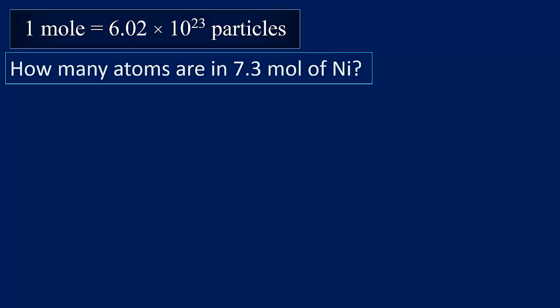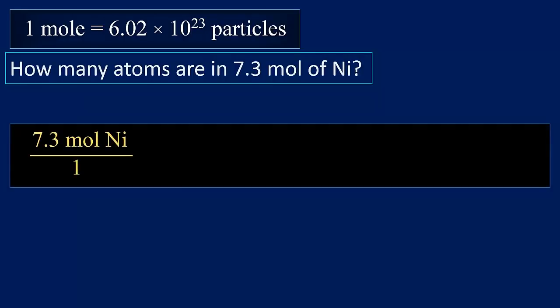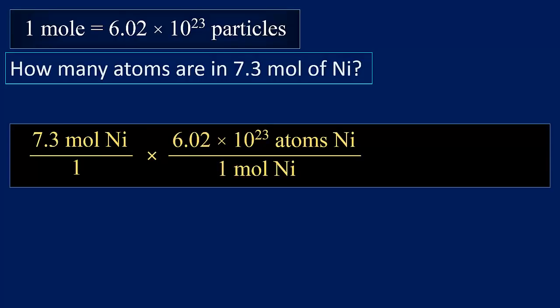Our next example is how many atoms are in 7.3 moles of nickel. We begin with the amount given in the problem, multiply by a fraction, the conversion factor, with the unit given on bottom, unit wanted on top. The numerical relationship between atoms and moles is given by Avogadro's number. The moles cancel. We are left with the desired unit, atoms. Note that particles, such as atoms or molecules, can be represented with just the symbol rather than writing out the terms atoms or molecules.